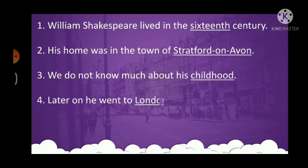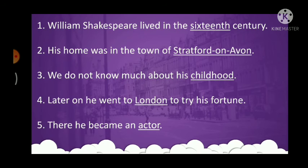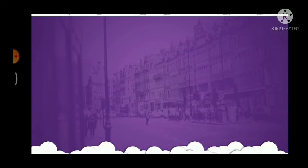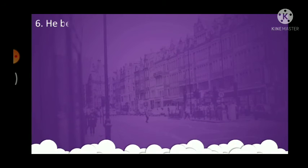4. Later on he went to blank to try his fortune. The answer is London. 5. There he became an blank. The answer is actor. 6. He began to write blank. The answer is plays.